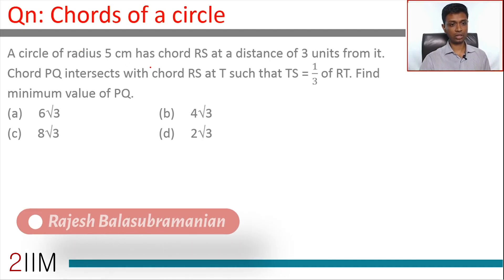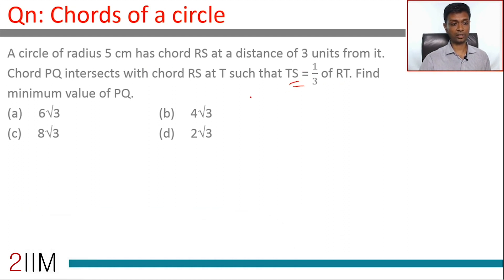A circle of radius 5 centimeters has a chord RS at a distance of 3 units from it. Chord PQ intersects with chord RS at T such that TS equals one third of RT. Find the minimum value of PQ. It's a tricky question. First, let's wrap our head around the diagram and then we'll go to PQ and the minimum value.